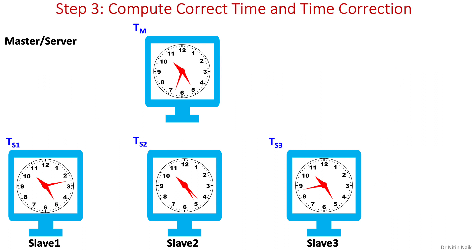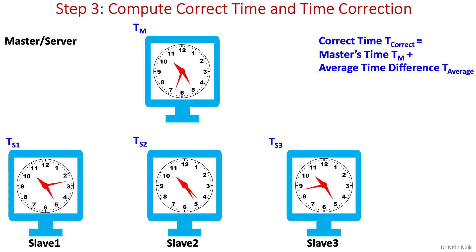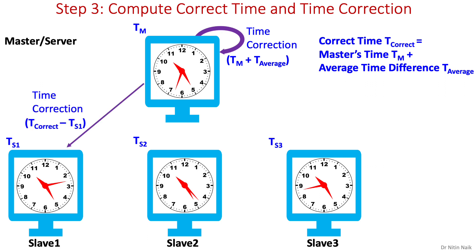In the third and final step, the master computes the correct time and sends an adjustment time to each slave machine to correct and synchronize its time. Here, the correct time equals master's time plus average time difference, which is the correct time of the master and network. The time correction for slave 1 is T-correct minus TS1.